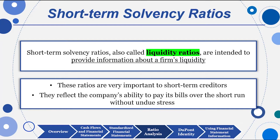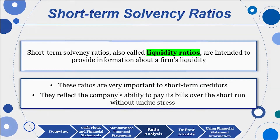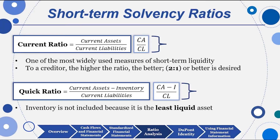These ratios are important to short-term creditors, reflecting the company's ability to pay bills over the short term. One of the most popular is the current ratio — simply current assets divided by current liabilities, both from the balance sheet. Generally the higher the better, though you don't want it too high if you're carrying lots of inventory with high holding costs. In my personal life, I like to have a two-to-one current ratio.